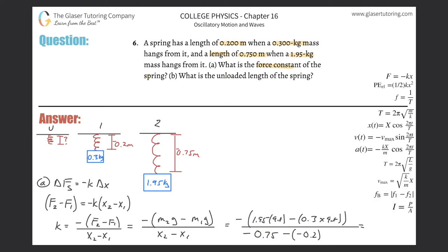If you notice, everything works out to be positive overall, which it should be. So: 1.95 × 9.8 minus 0.3 × 9.8, then divide by 0.75 minus 0.2, and we get k = 29.4 newtons per meter. That takes care of part a.